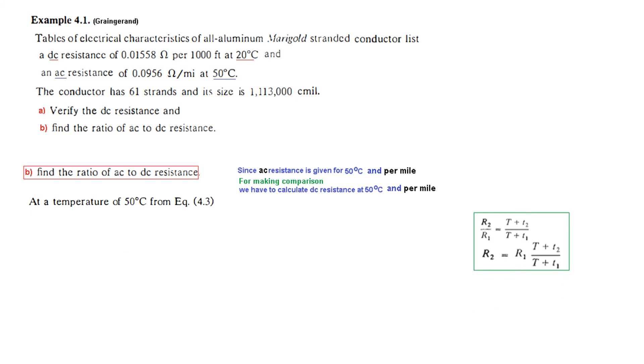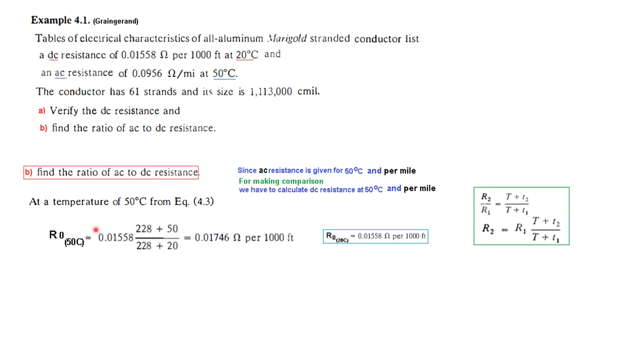For that we will use this formula here, and we will now calculate the resistance at 50 degree. We have already calculated resistance at 20 degrees, so we will use that. This was the resistance calculated at 20 degree. Capital T we will be using 228 as I mentioned earlier from the table. Temperature 50 and temperature 20. And this is the value of resistance at 50 degree centigrade, but this is for 1000 feet.